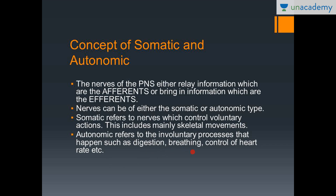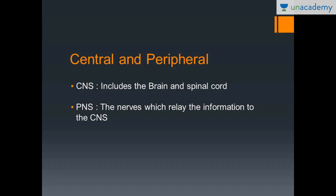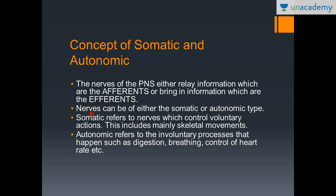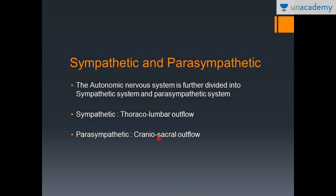So both the somatic and autonomic nerves are divisions of the peripheral nervous system. The divisions of the nervous system include the central and the peripheral — CNS and PNS — and the peripheral nervous system can further be divided into the somatic and the autonomic. Moving on, what complicates it further is that the autonomic nervous system is still further divided into the sympathetic and the parasympathetic nervous system.